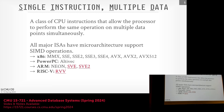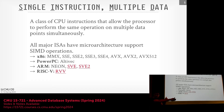SIMD is a class of CPU instructions that allows our processor to perform the same operation on multiple pieces of data at the same time. This works via special SIMD registers. The overall goal is to keep things in SIMD registers for as long as possible, doing as much processing as we can, and only bring data back to CPU cache or memory when we're done.